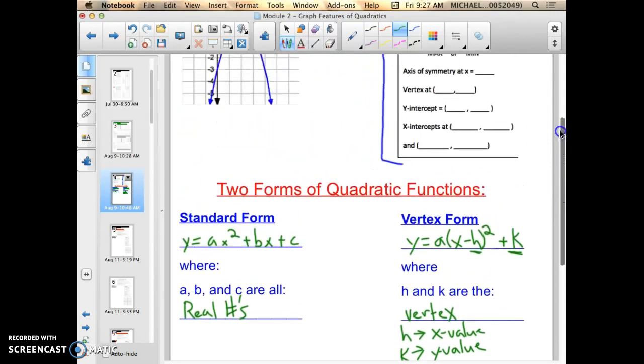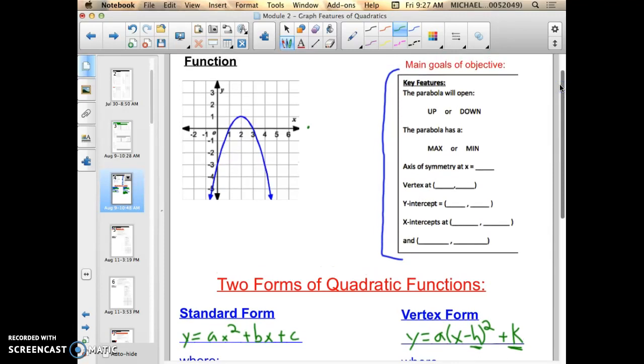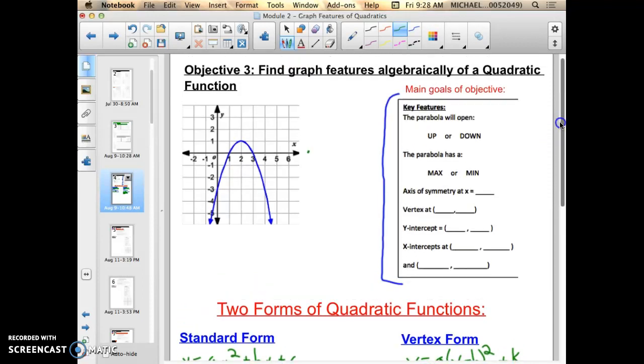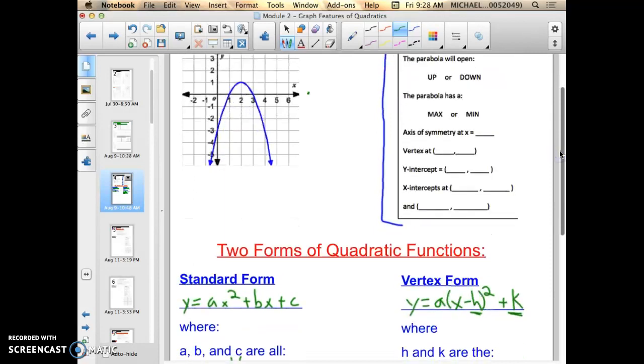Let's look at, to finish this video, because the objective is if given a standard form of quadratic function, can you find all the graph features that I want? And if given a vertex form of quadratic function, can you find the same features as well? This graph right here, in blue,